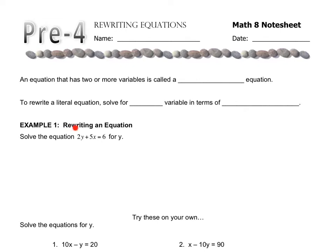So what we're going to do is we're going to rewrite the equations in terms of one of the variables. And when you have more than one variable in an equation, you have this thing called the literal equation. So let's fill in the first blank. An equation that has two or more variables is called a literal equation.